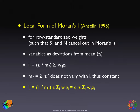For row-standardized weights, the sum of all the weights equals the number of observations, so the S0 and the N cancel out in the numerator and denominator of the Moran's I expression. We take the variables as deviations from the mean, or sometimes we standardize them — it doesn't really matter as long as they're not in the original values.